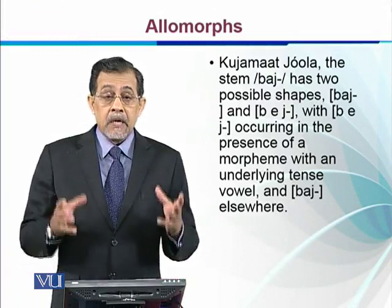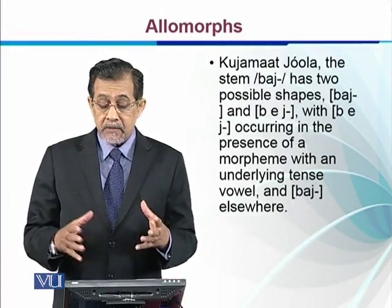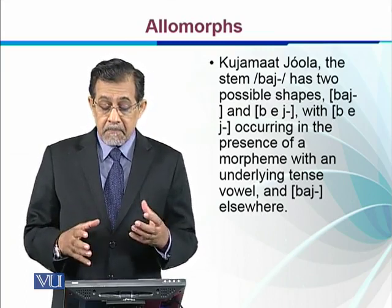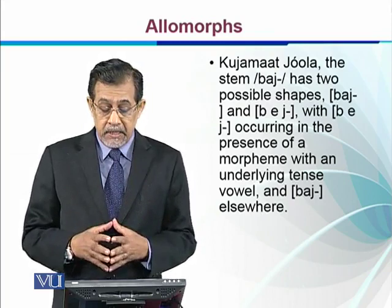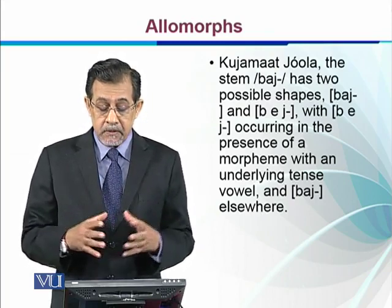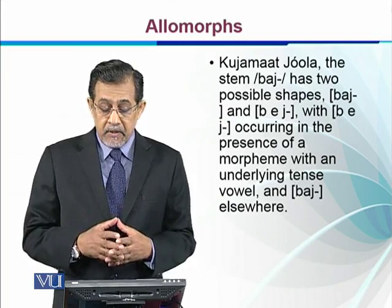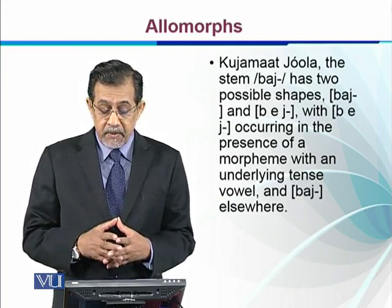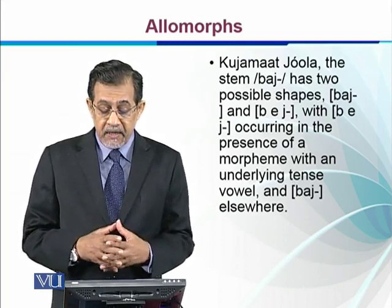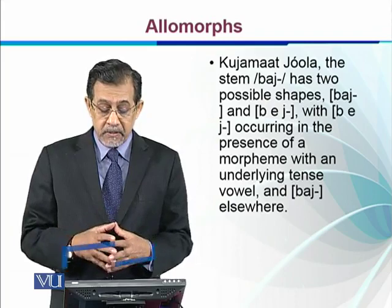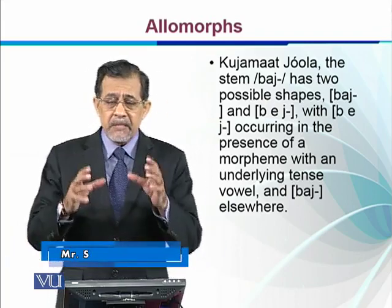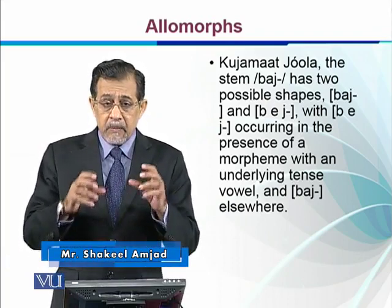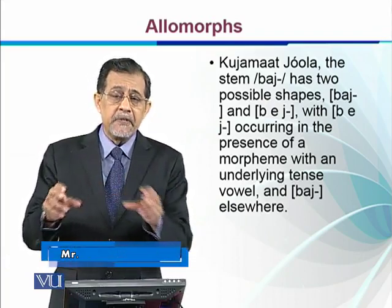Allomorphs. In the Chumat Jola language, the stem 'Baj' has two possible shapes: Baj and Baj, with one form occurring in the presence of a morpheme with an underlying tense vowel and the other form occurring elsewhere. This means that these are two allomorphs, but they occur in different circumstances.